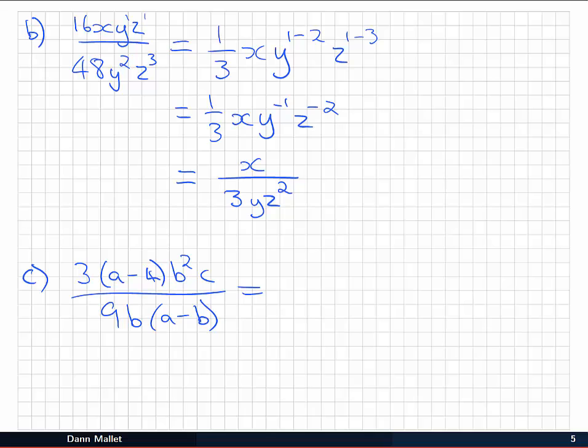In part C, we've got 3 times (a minus 4) b²c all over 9b(a minus 4). Now you could write this in a similar way to the previous example, but I'm going to do this one with a little bit of canceling on the fly for those of you who are more comfortable with that.